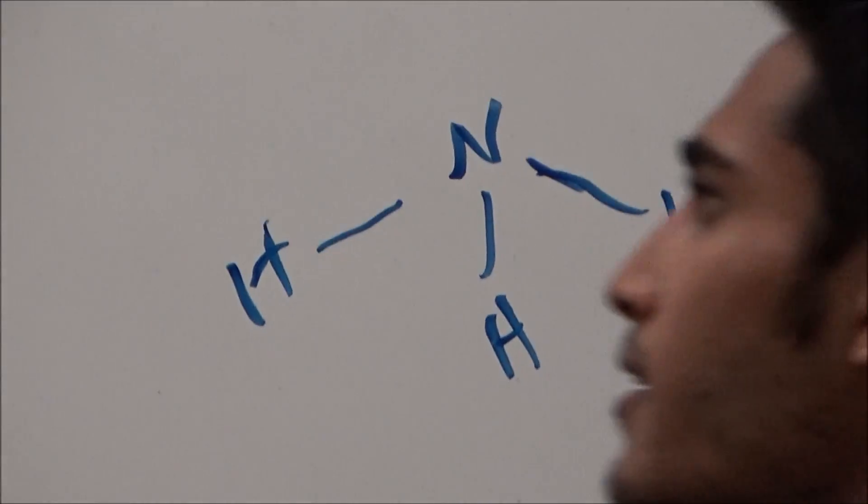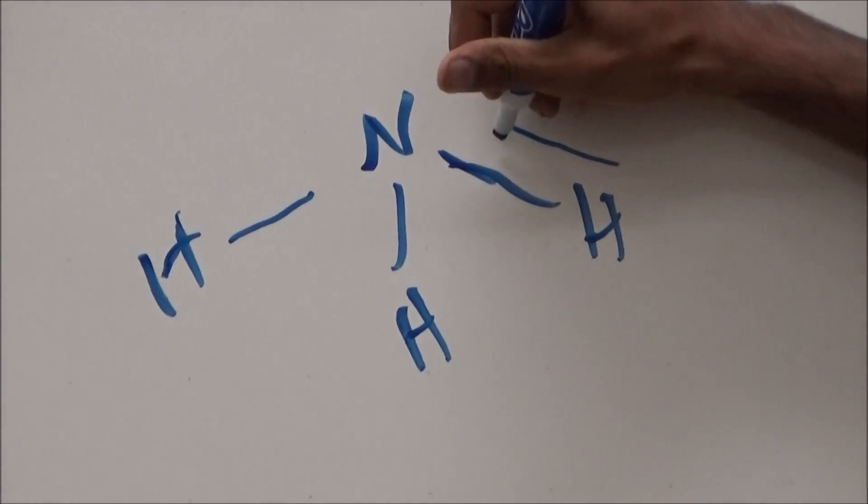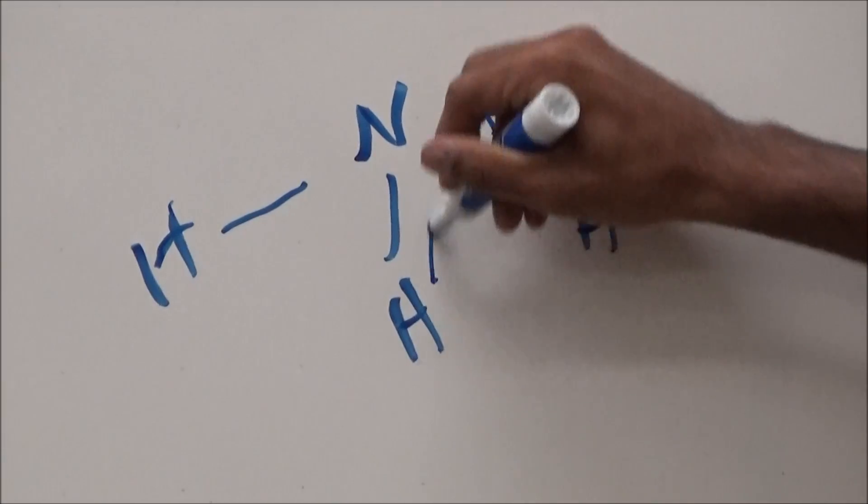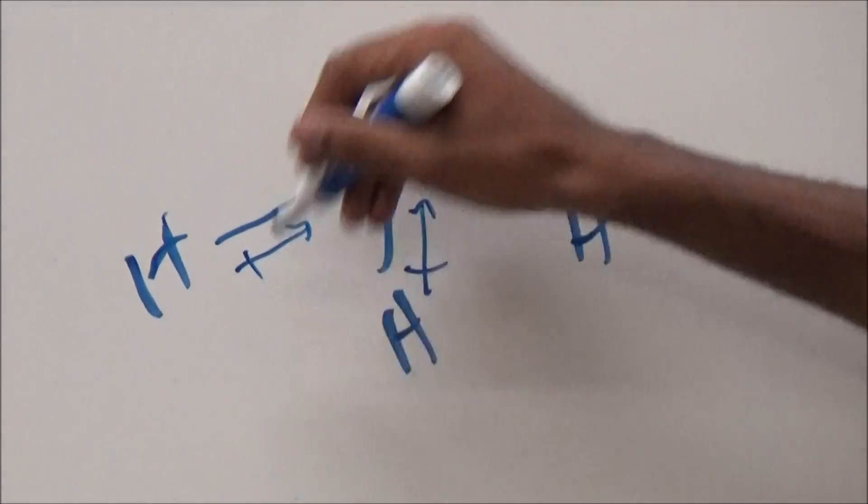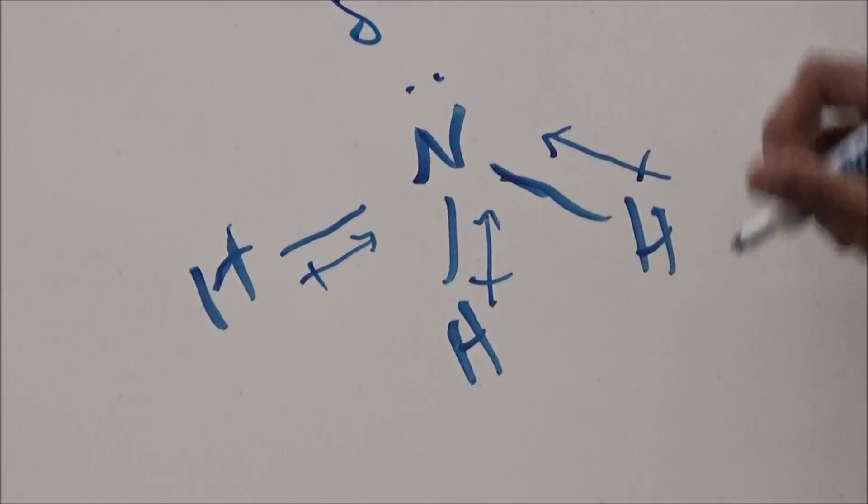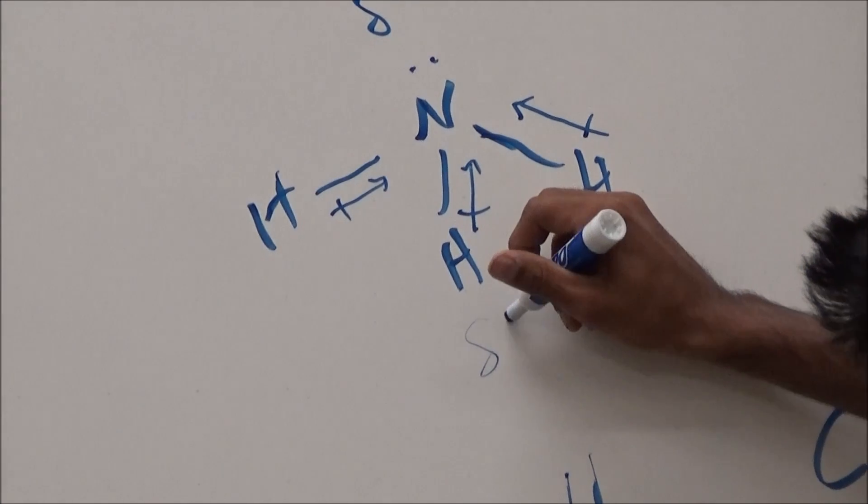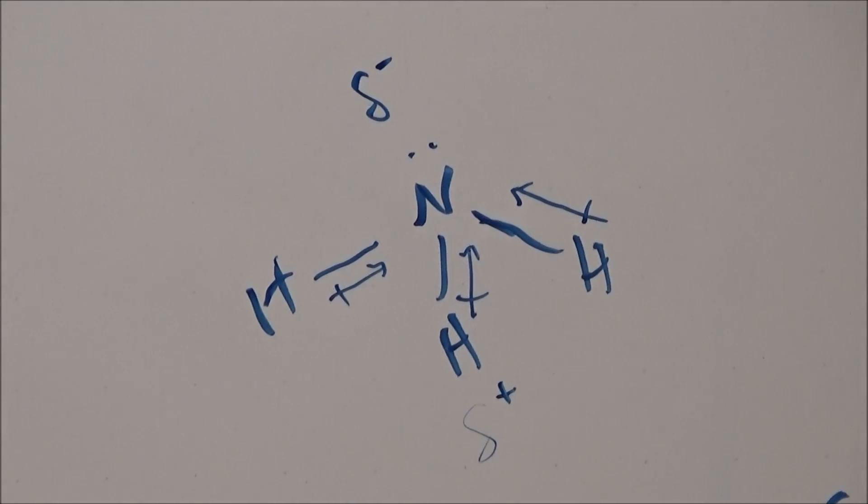But if you have something like ammonia, then because N is more electronegative than H, then N will hold its electrons, the shared electrons, closer to its own nucleus. And therefore, N will have a partial negative charge, and H, because its electrons are being pulled away, will have a partial positive charge.